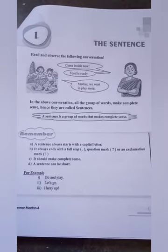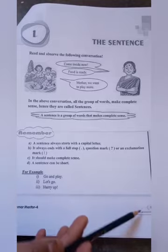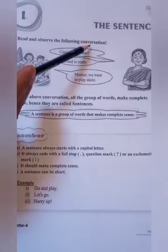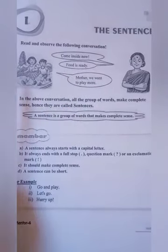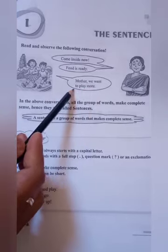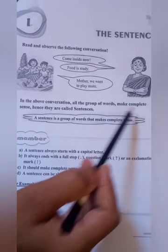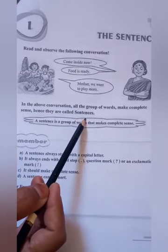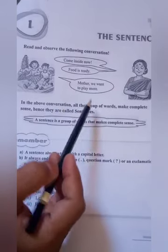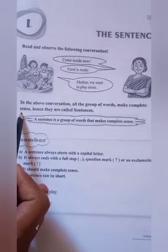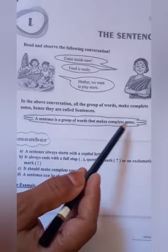Now turn to the page. Let us start our new lesson on page number nine. The first lesson is the sentence. Read and observe the following conversation. In the conversation, all the groups of words make complete sense — hence they are called sentences. A sentence is a group of words that makes complete sense.